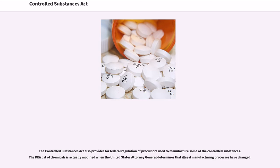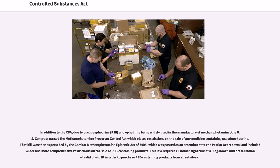The Controlled Substances Act also provides for federal regulation of precursors used to manufacture some of the controlled substances. The DEA list of chemicals is modified when the United States Attorney General determines that illegal manufacturing processes have changed. In addition to the CSA, due to pseudoephedrine (PSE) and ephedrine being widely used in the manufacture of methamphetamine, the U.S. Congress passed the Methamphetamine Precursor Control Act which places restrictions on the sale of any medicine containing pseudoephedrine. That bill was then superseded by the Combat Methamphetamine Epidemic Act of 2005, which was passed as an amendment to the Patriot Act renewal and included wider and more comprehensive restrictions on the sale of PSE-containing products. This law requires customer signature of a logbook and presentation of valid photo ID in order to purchase PSE-containing products from all retailers.